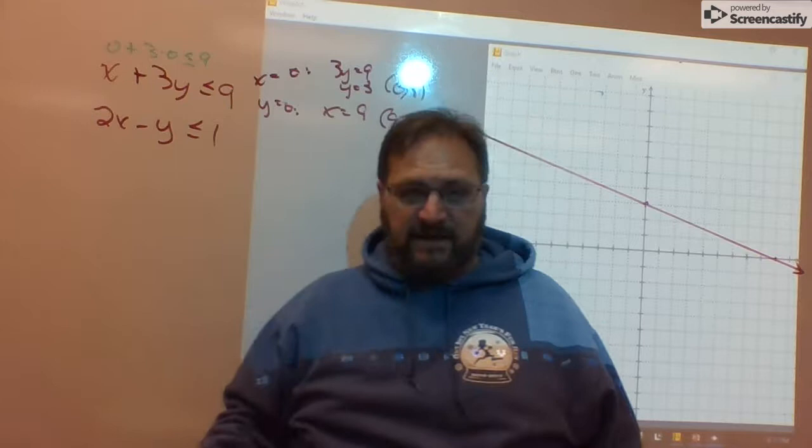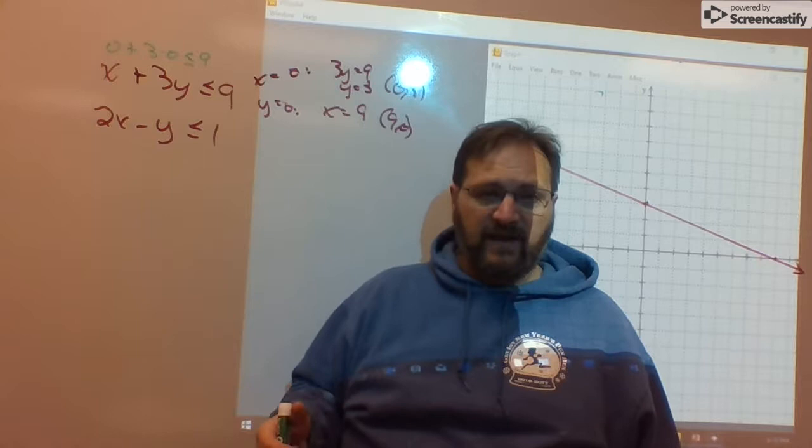Is 0 plus 3 times 0 going to be less than or equal to 9? Left side 0, right side 9. Yep, it works.